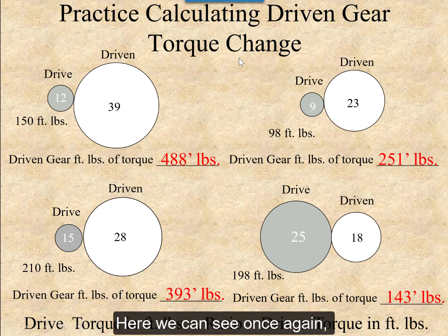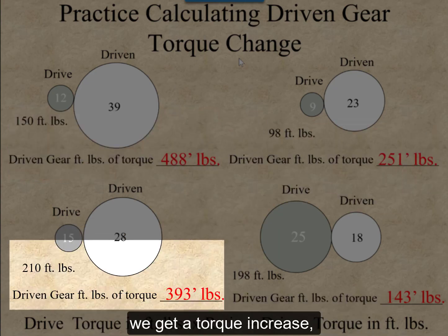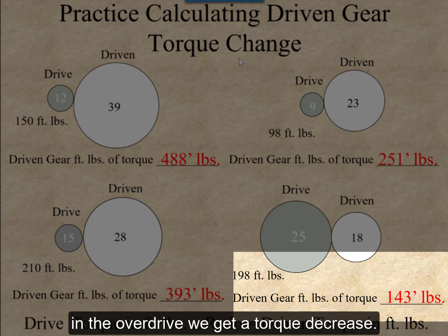Here we can see once again that when we have gear reduction in the first three, we get a torque increase, and in the overdrive, we get a torque decrease.